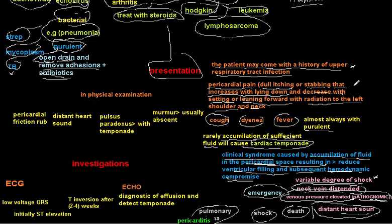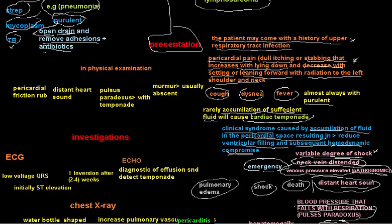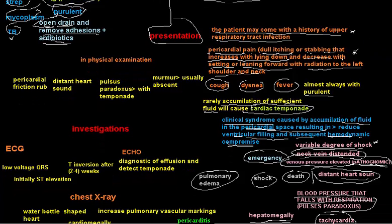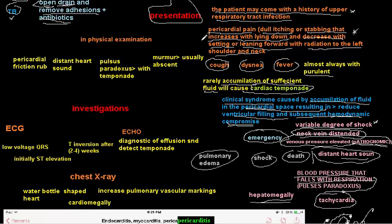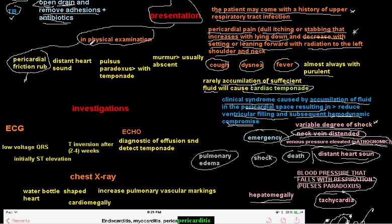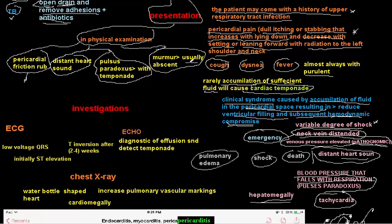Returning to pericarditis: on physical examination, we notice what is called a pericardial friction rub. We may also have distant heart sounds (especially with cardiac tamponade), pulsus paradoxus with sufficient fluid accumulation, and murmurs are usually absent in pericarditis.